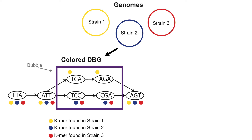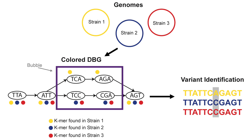Variant identification, for example, utilizes a colored de Bruijn graph from multiple closely related genomes and then looks for specific features within the graph that are formed when variants are present. One feature that is commonly used is referred to as a bubble. This kind of feature is formed when there are largely homologous stretches within multiple sequences that have slight differences between them. Once a bubble is found, the sequences from the diverging paths that make up the bubble can be assembled and used to identify which variants were causing the bubble to be formed and what genomes those variants are present in. This concept has been extended to find indels, to identify homologous stretches of DNA, and has even been applied to metagenomes, allowing for variant identification in complex microbial communities.